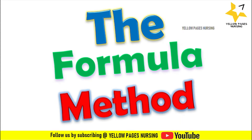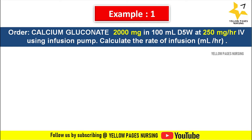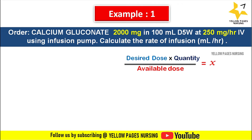Using the formula method, let's discuss the first example. Doctor's order is calcium gluconate 2000 mg in 100 ml D5 water at 250 mg per hour IV using infusion pump. Calculate the rate of infusion, that is ml per hour. The formula here is: desired dose multiplied by quantity divided by available dose equals X.